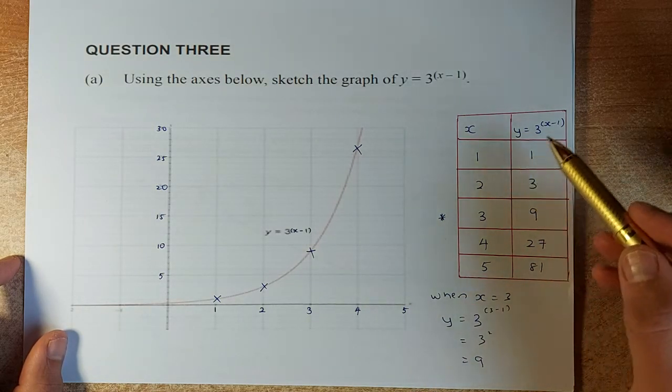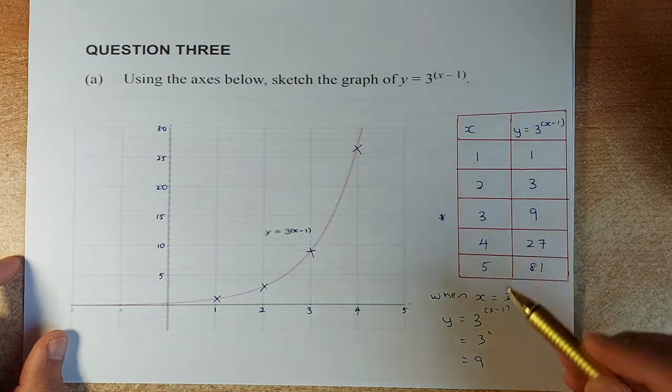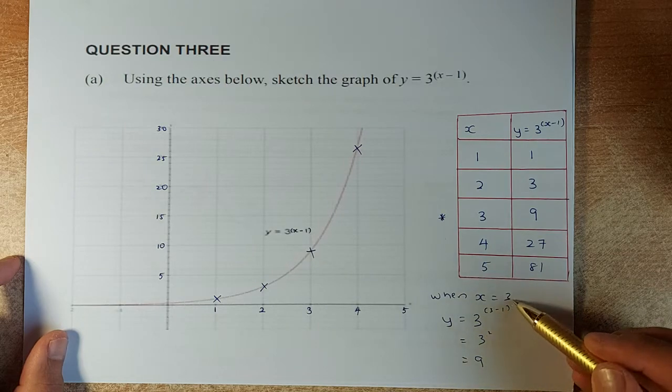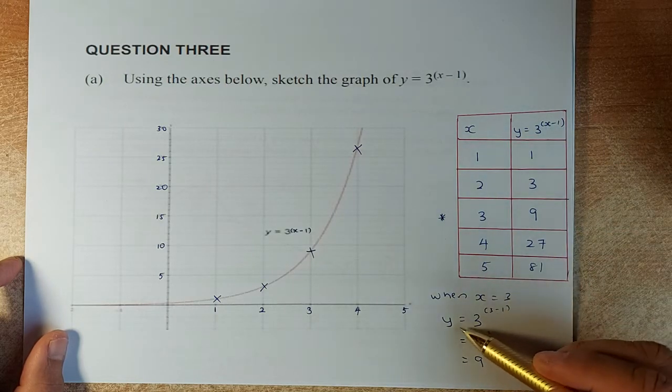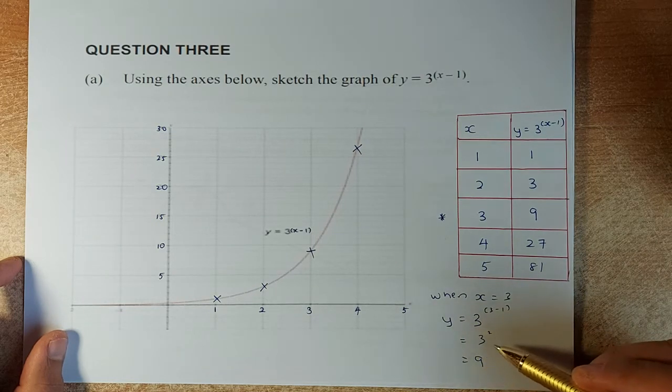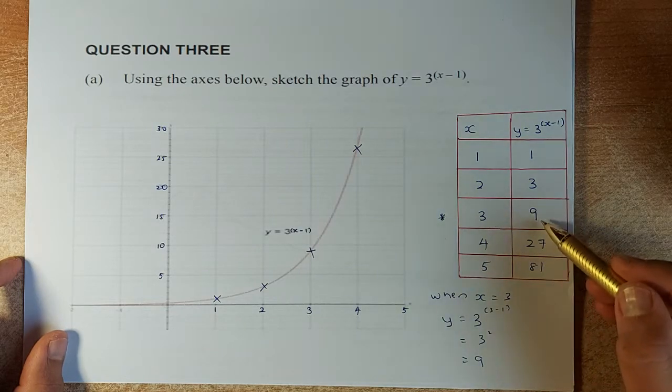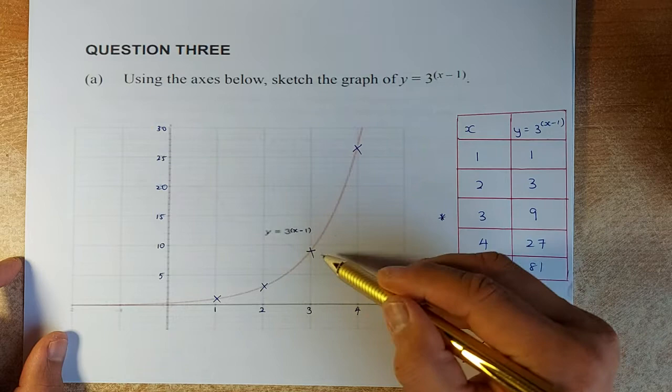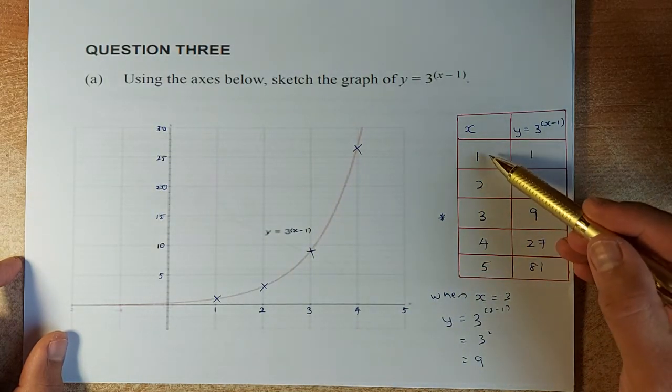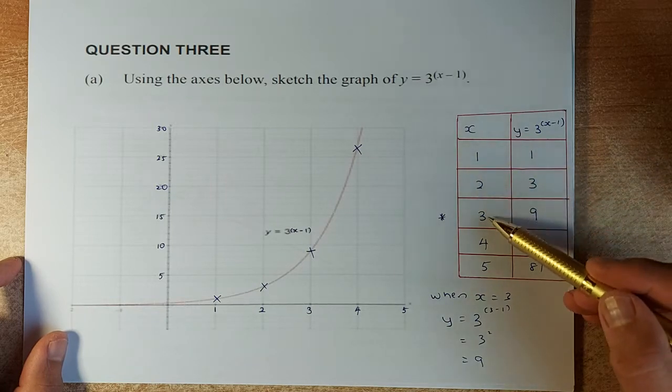So when x equals 1, we substitute and get y equals 1. Let's look at when x equals 3. The equation is y equals 3^(x-1). When x equals 3, we substitute x equals 3 into that equation. So y equals 3 times (3 minus 1) or y equals 3 squared, which equals 9. So when x is 3, y is 9. We plot the point x is 3, y is 9 and that will be the point.